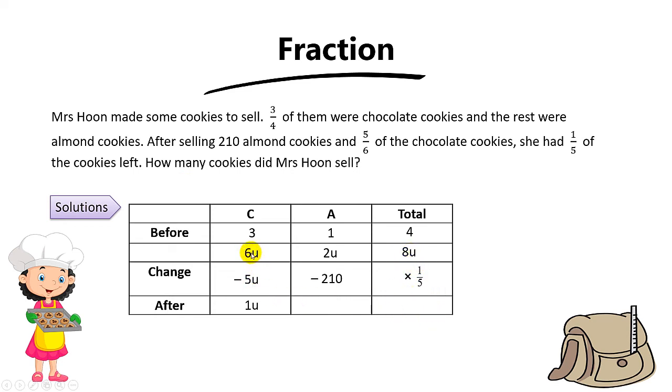So one-fifth times 8 units gives you the cookies left over. 6 units minus 5 units gives you 1 unit for the chocolate left. For the total, 8 units times one-fifth gives you 1.6 units. Don't worry about decimals—sometimes units can have decimals. To find the almond, you take this minus this, and you get 0.6 units.